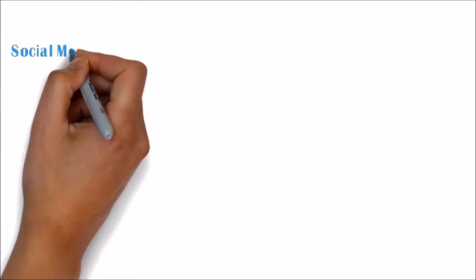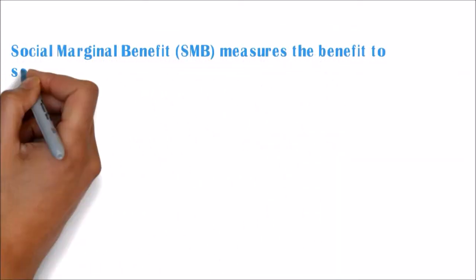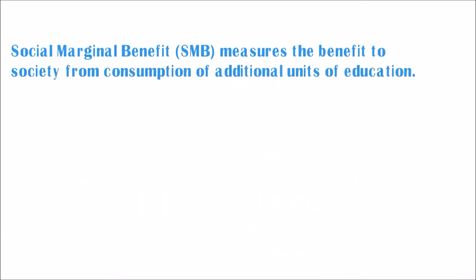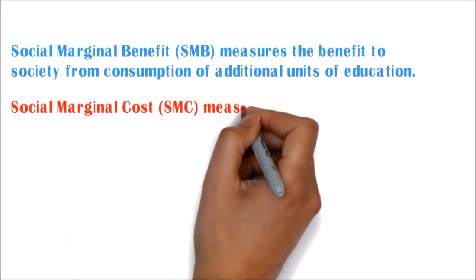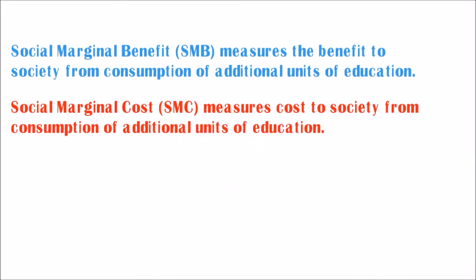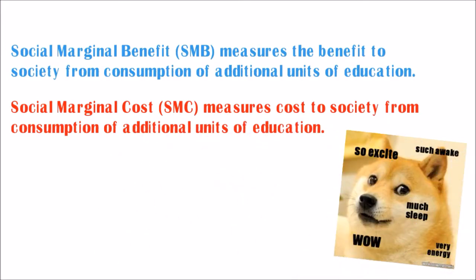Social Marginal Benefit, SMB, measures the benefit to society from the consumption of additional units of education. Social Marginal Cost, SMC, measures the cost to society from consumption of additional units of education.